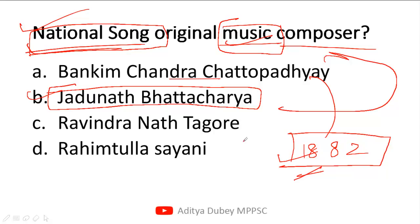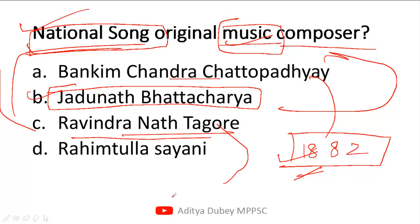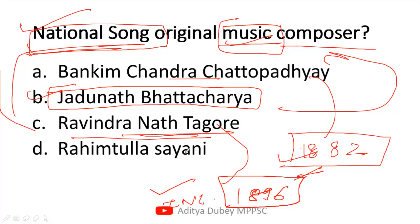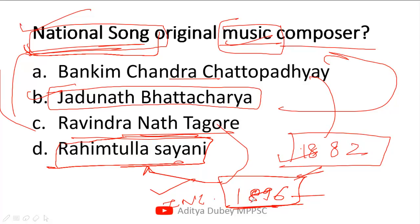Rabindranath Tagore wrote our national anthem. Regarding national song, another important fact: Vande Mataram was sung for the first time at the Calcutta session of the Indian National Congress in 1896 — sung by Rabindranath Tagore. The 1896 Congress session was presided over by Rahimtula Sayani. Now a question for you: when did Rabindranath Tagore receive the Nobel Prize, and in which subject? Please comment if you know.